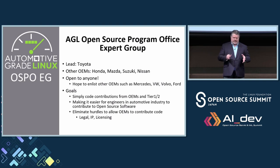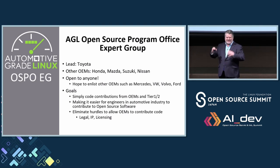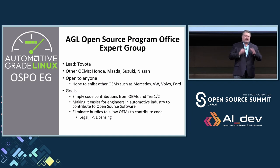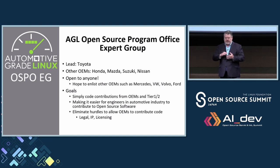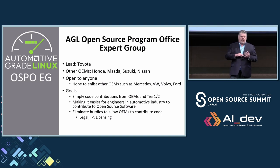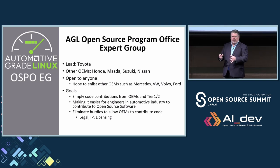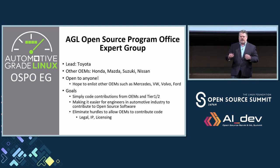Car companies historically have been quite risk-averse — they have very large departments of lawyers. We have to teach car companies how to contribute to open source, specifically to AGL. There are a lot of automotive-specific things that will come out of this. We will document best practices, how to deal with licensing and IP issues, and how to build a code contribution process inside your company — so that car companies and suppliers can easily have their engineers contribute to open source.